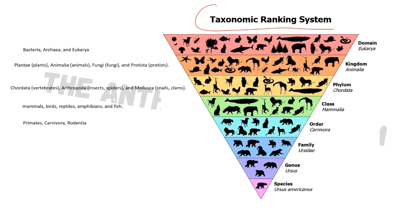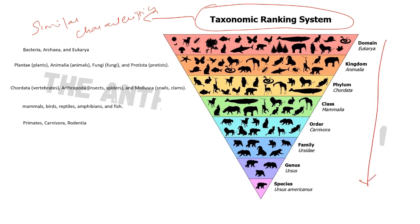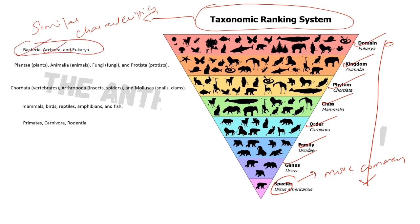To understand human evolution more precisely, it's important to have basic knowledge of the taxonomic ranking system — the classification of living organisms that share similar characteristics. Under the taxonomy classification system, there are various levels: domain, kingdom, phylum, class, order, family, genus, and species. As you go from top to bottom, the similarities between organisms increase. Under domain, there are three categories: bacteria, archaea, and eukarya — organisms that have complex cell structures.